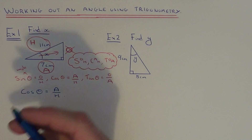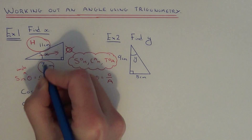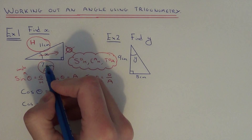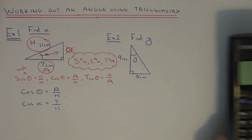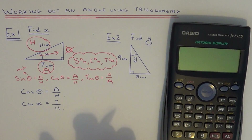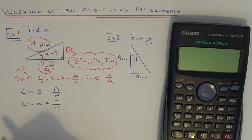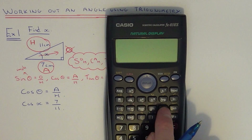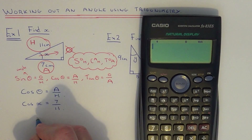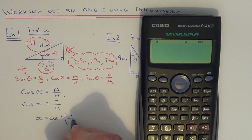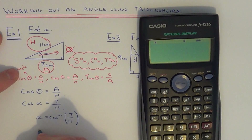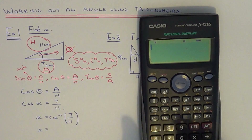If we substitute our values into the formula: cos x — x is the angle — the adjacent is 7 and the hypotenuse is 11, so we get cos x equals 7 over 11. To work out x we need to get rid of the cos, and the opposite to cos is cos inverse, which is cos to the power of minus 1 on your calculator. So we need to cos inverse the fraction on the right hand side, and that will convert the fraction into an angle.